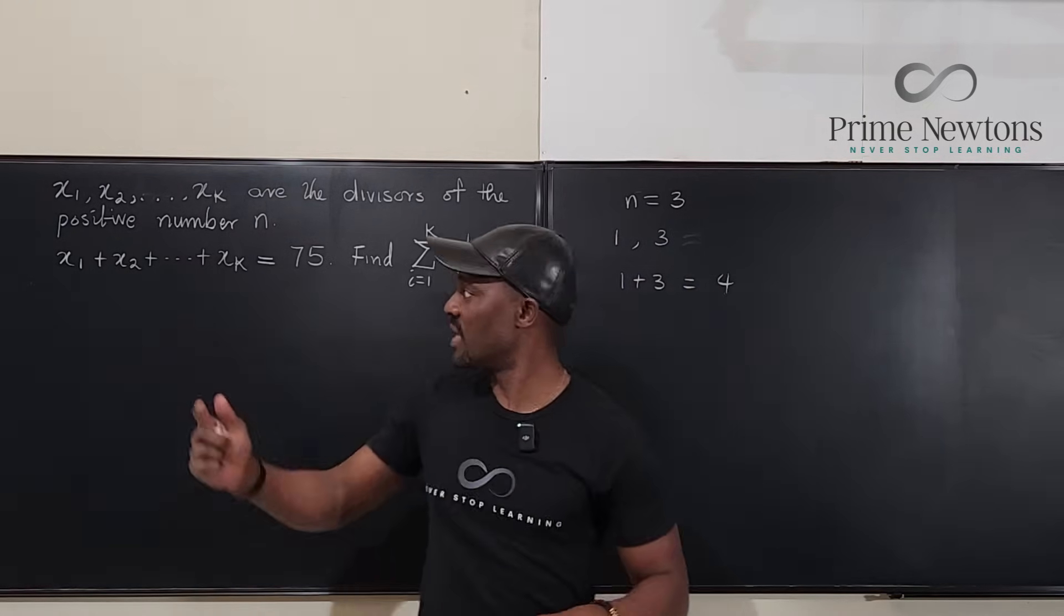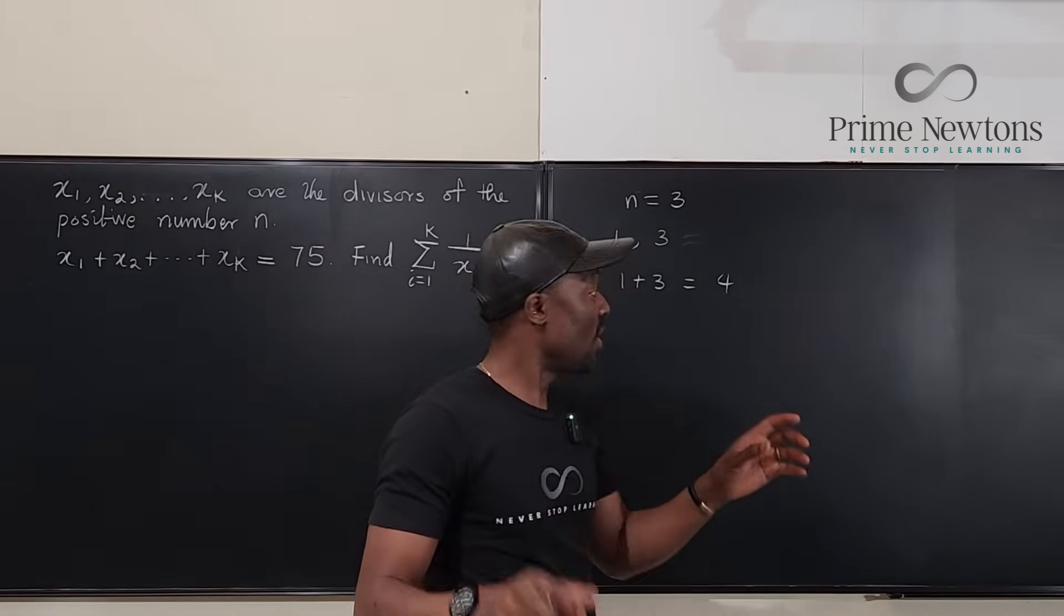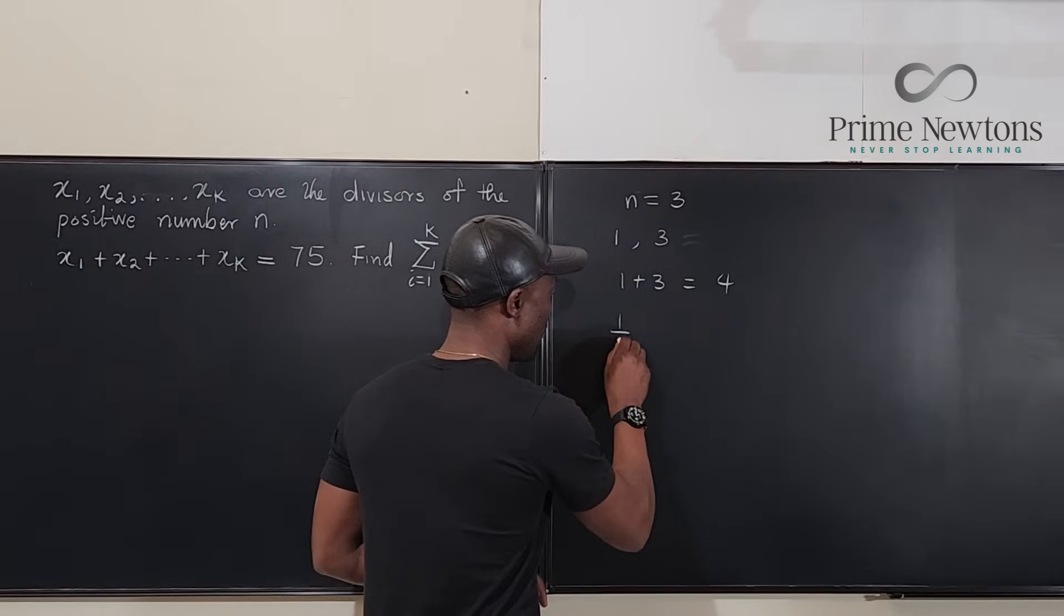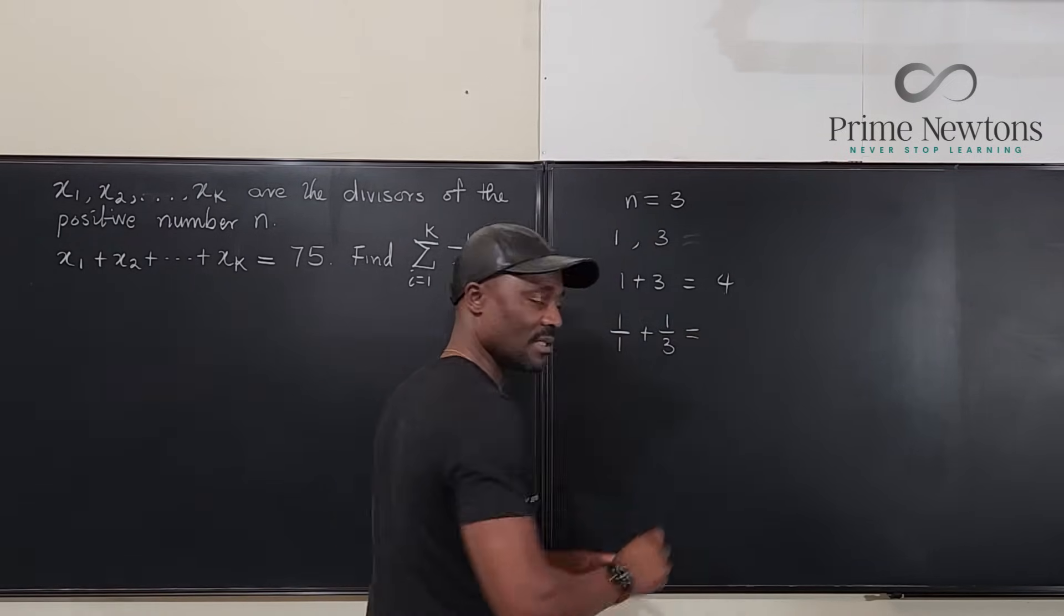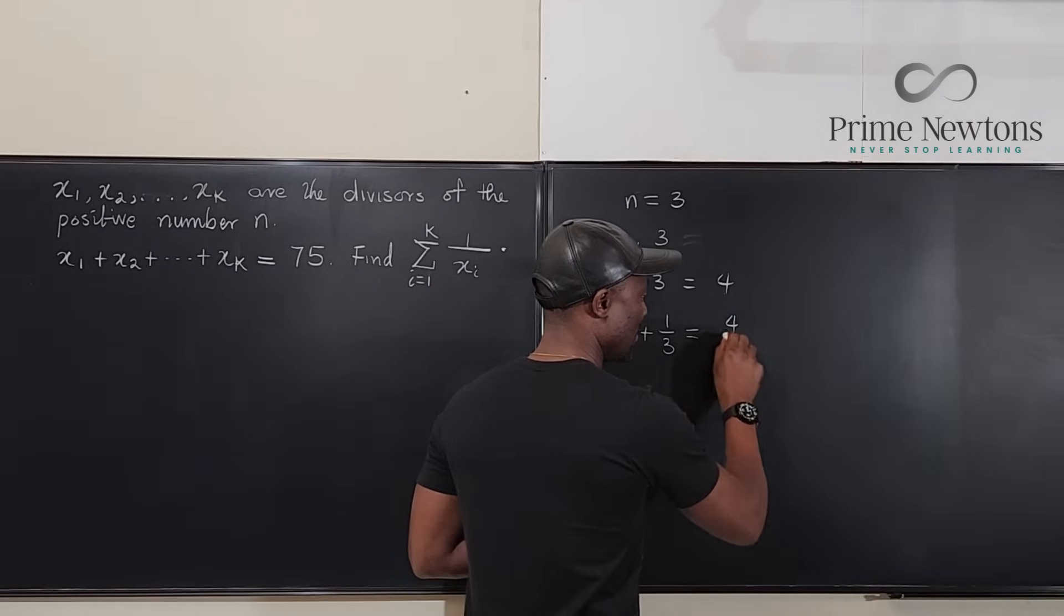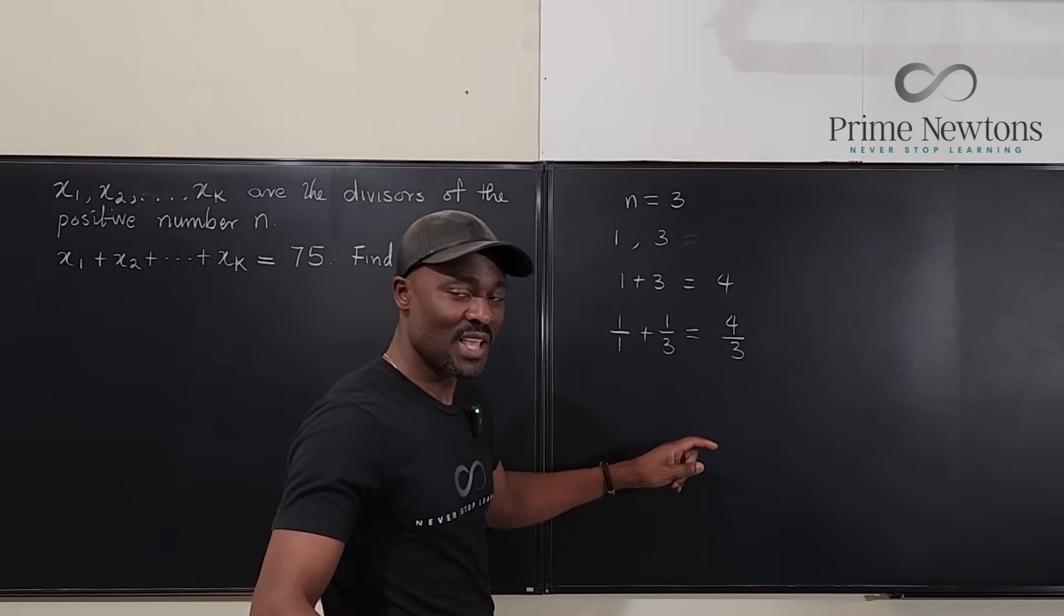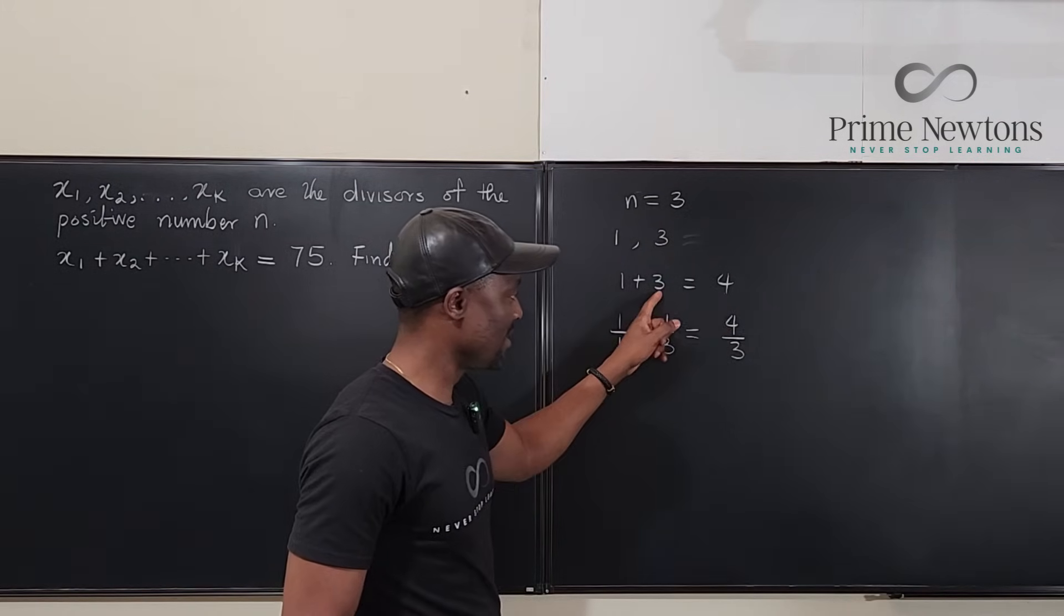So, this now is representing our 75. So, the question is, what will be the sum of the reciprocals of the divisors? So, I'm going to have 1 over 1 plus 1 over 3. Notice that when you add 1 to 1 third, you're going to get 4 thirds. You see that the two numbers have appeared. This 4 and this 3.